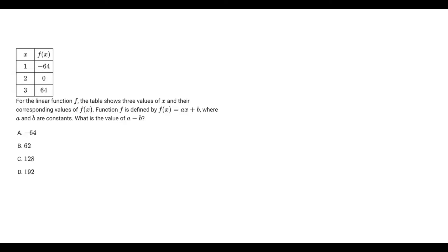Alright, so can you solve this SAT math problem? As always, try the problem on your own and let's get right into it. For the linear function f, the table shows three values of x and their corresponding values of f(x). Function f is defined by f(x) = ax + b where a and b are constants. What is the value of a minus b?